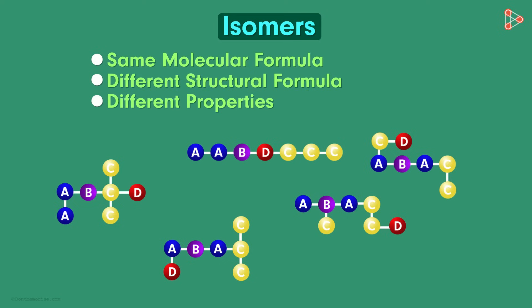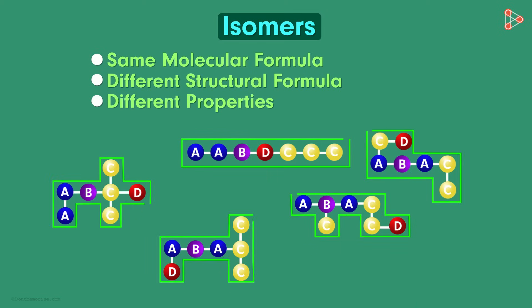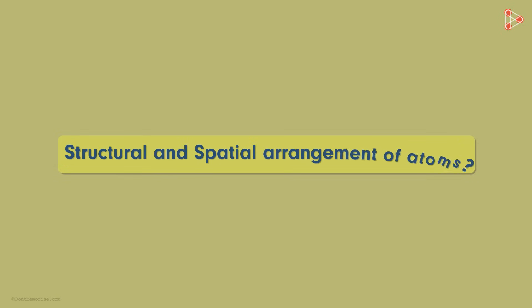That means if we take molecules of isomers and compare them, the number of atoms in each molecule will be the same but their structural or spatial arrangement will be different. What do we mean by structural and spatial arrangement of atoms? We will see that in the next video.